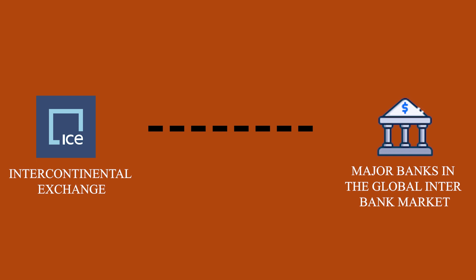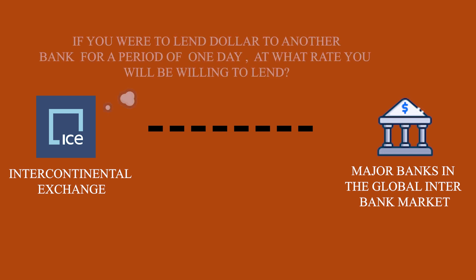To determine the LIBOR rate, a hypothetical question was asked to banks: if you were to lend dollars to another bank for a period of one day, at what rate would you be willing to lend? Around 14 to 18 banks were asked this question. This hypothetical question was asked for five different currencies and seven prescribed maturities. So effectively, each bank would give 35 quotes.